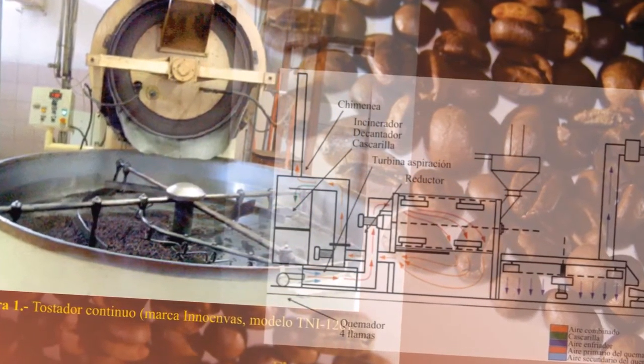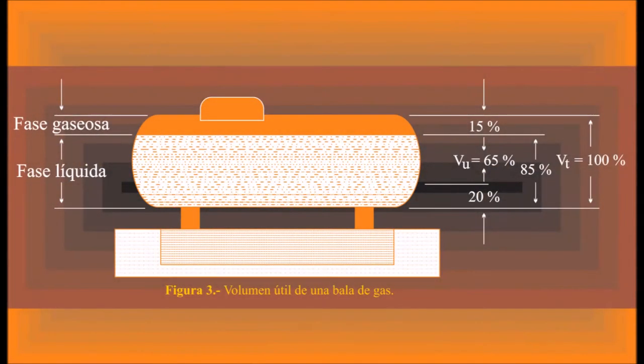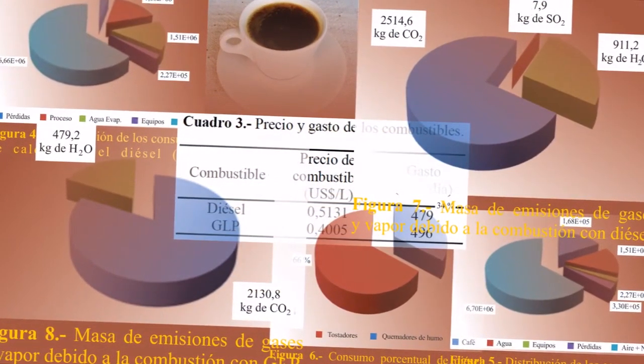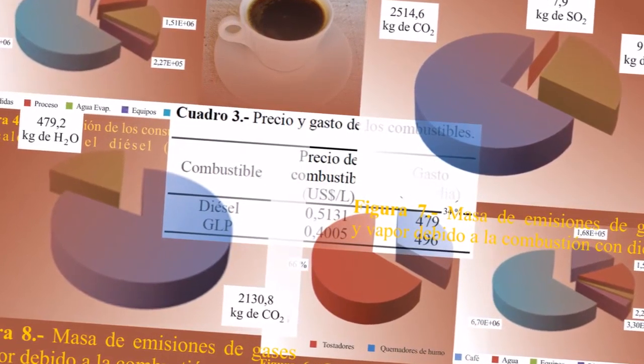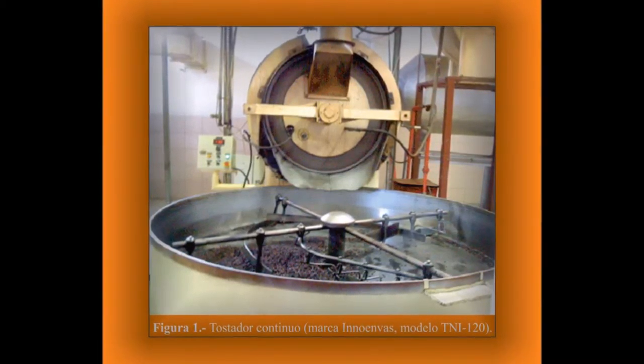An energy balance is performed and the volume of required storage tank is calculated. It was found that the amount of LPG needed would be 1240 liters at a cost of $496.